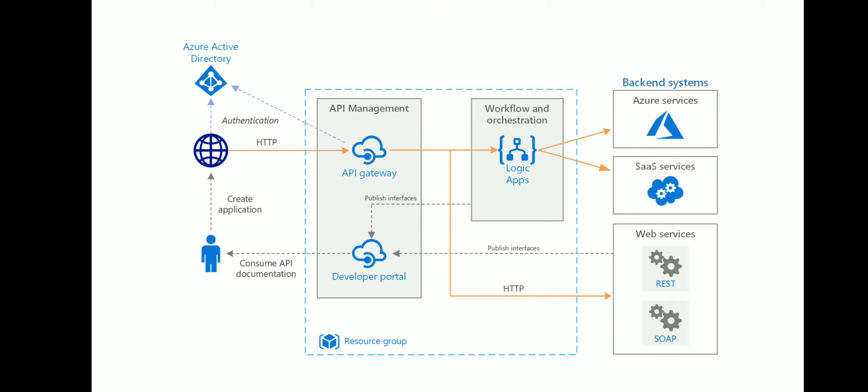Azure DNS is a hosting service for DNS domains. In this case it provides name resolution by using Microsoft Azure infrastructure by hosting domains in Azure. Active Directory is used to authenticate clients that call the API. Azure AD supports the OpenID Connect (OIDC) protocol, so clients obtain an access token from Azure AD and the API Gateway validates the token to authorize the request.